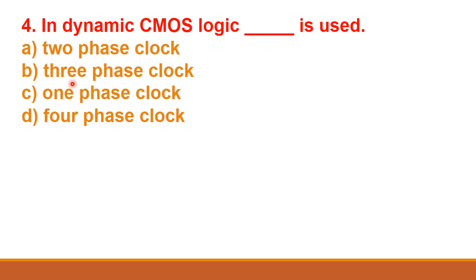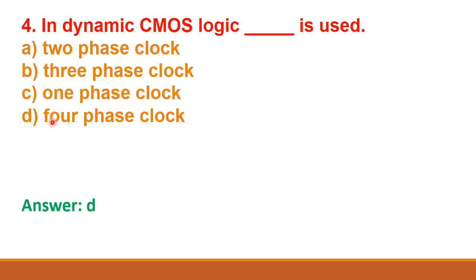Next question: in dynamic CMOS logic, dash is used — option A: two phase clock, option B: three phase clock, option C: one phase clock, option D: four phase clock. The correct answer is option D: four phase clock. In dynamic CMOS logic, four phase clock is used.